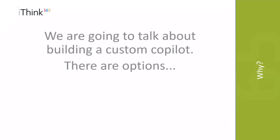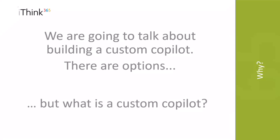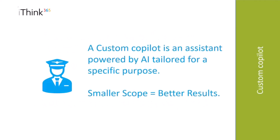First of all, why? You have to start with why, as Simon Sinek says. We're going to talk about building custom co-pilots, and there are some options. A custom co-pilot with a lowercase 'c' is an assistant — it's powered by AI and tailored for a specific purpose. That gives the ability to deliver better results because it's got a smaller scope — the data scope is smaller, or what it's trying to do is very specific. Think of it a little bit like an app on your phone.